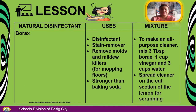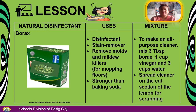Next is borax. It is used as a disinfectant and stain remover, removes molds and mildew, is used for mopping floors, and is stronger than baking soda. For the mixture to make an all-purpose cleaner, mix 3 tablespoons of borax, 1 cup of vinegar, and 3 cups of water, or spread the cleaner on the cut section of a lemon for scrubbing.